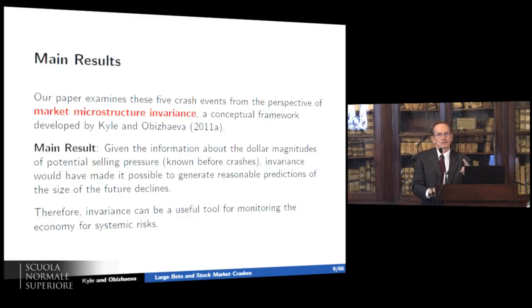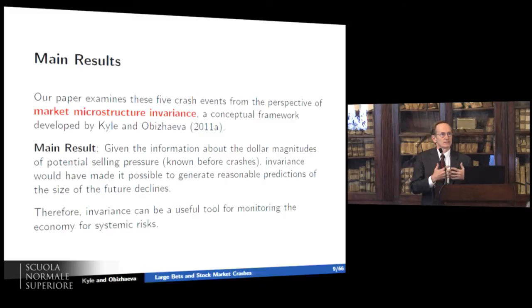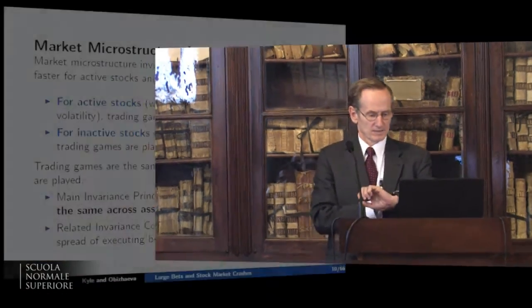For the other three crashes — Soros, Societe Generale, and the 2010 flash crash — they were essentially secrets. Only George Soros knew what he was going to do. Only Societe Generale presumably knew about Jerome Kerviel. And in the 2010 flash crash, only the large trader knew what he was about to sell. But all three had very precise knowledge of exactly what they were going to sell, and they sold exactly what they planned to sell, despite the big market disruption the selling caused.